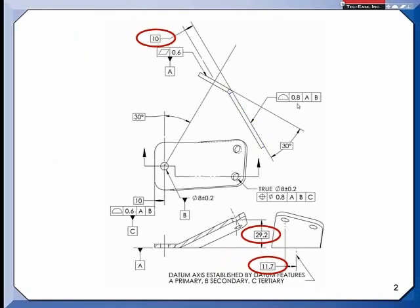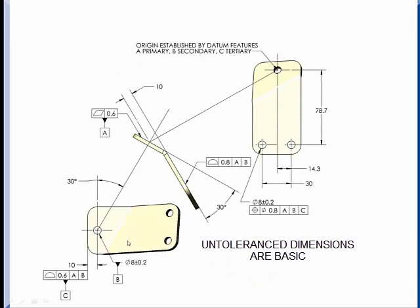A different approach is, once again we have the same datum features here, but I put the views so they're projected so that I can look straight down the axis of the two holes. So first we establish our origin of measurement, and then in my inspection setup I would flip it to the compound angle. So I'd be flipping it twice, once to this 30 degree angle and then to this 30 degree angle, but that would give me a view straight down the hole.